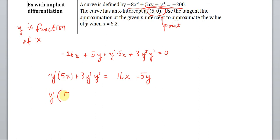And we're left with 5x + 3y² is equal to the expression that we had on the left side, which is 16x - 5y. Then divide everything by 5x + 3y². So y' equals (16x - 5y) all of this over (5x + 3y²).